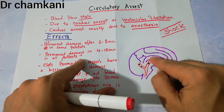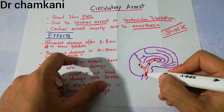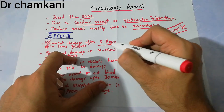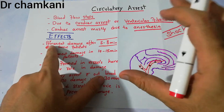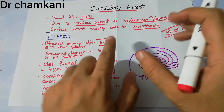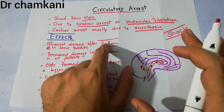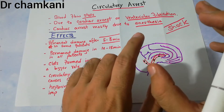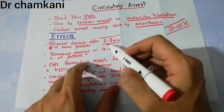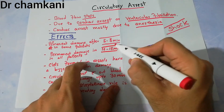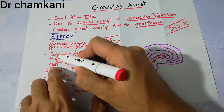If blood flow to an area of the brain stops for 5 to 8 minutes, around half of the patients will have some degree of brain damage. But if the circulatory arrest lasts for around 10 to 15 minutes, it will cause permanent damage to the brain in almost all patients.